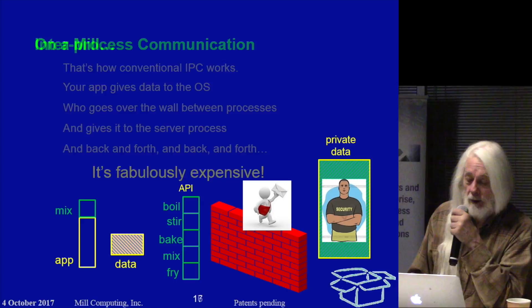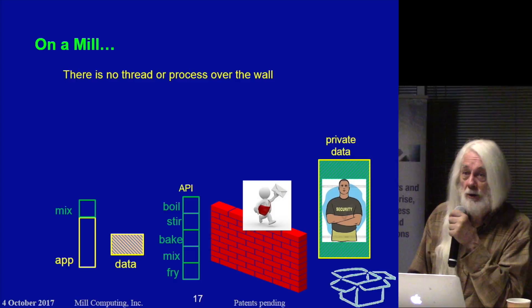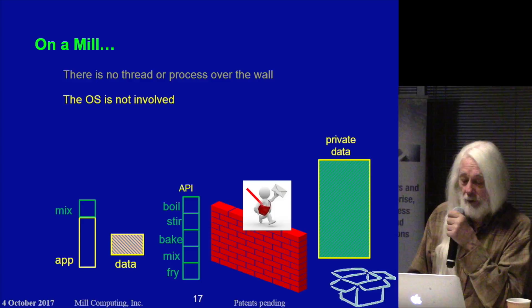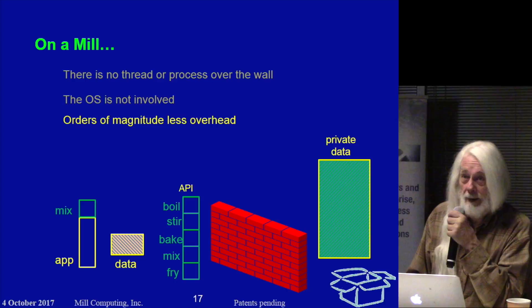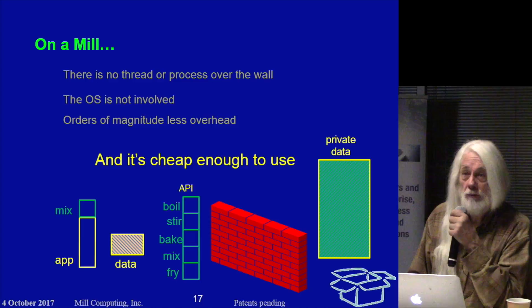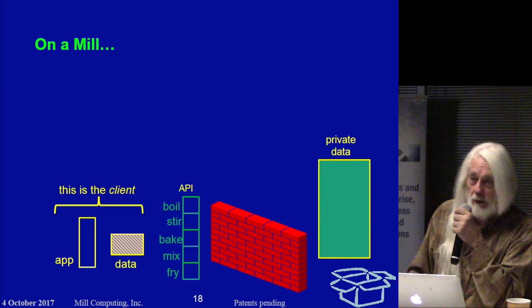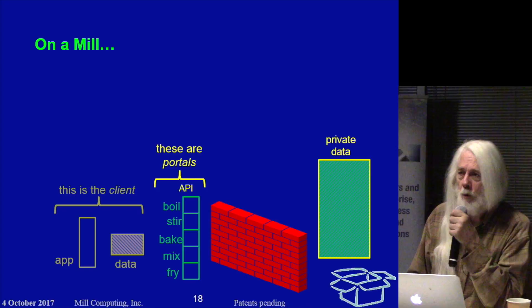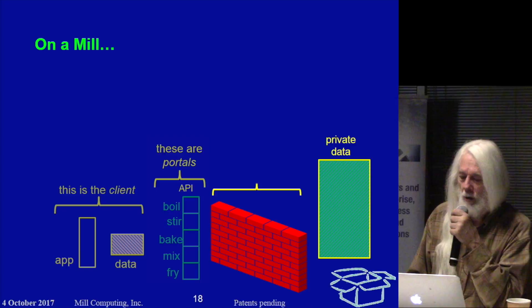On a Mill, there's no thread or process on the other side of the wall. It's just the private data. The OS is not involved. It's orders of magnitude less overhead. Whereas it used to be fabulously expensive, it's now cheap enough to use. These are portals — API entry points that say, when you call this, I need to be operating on the other side of the wall. This is the permission, hardware-supported by the architecture. And this is the service that is separate from and does not have access to the client stuff except what the client gives it.